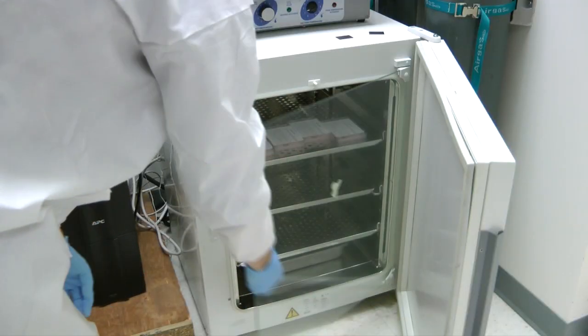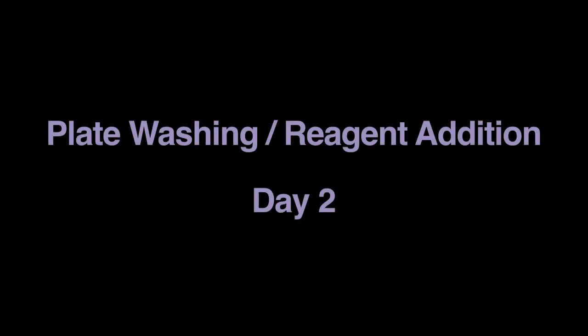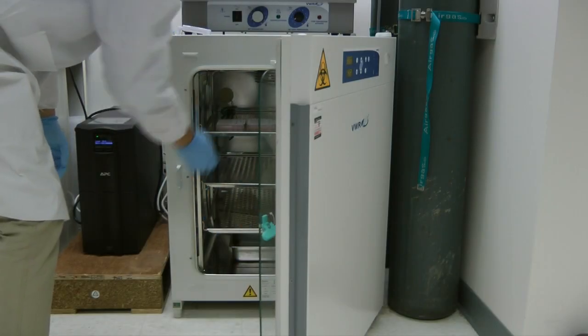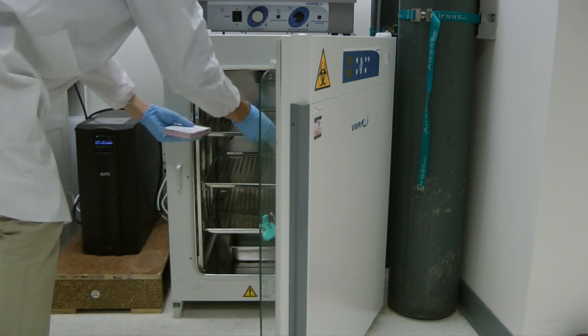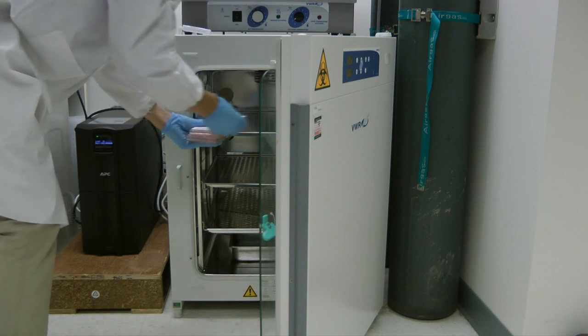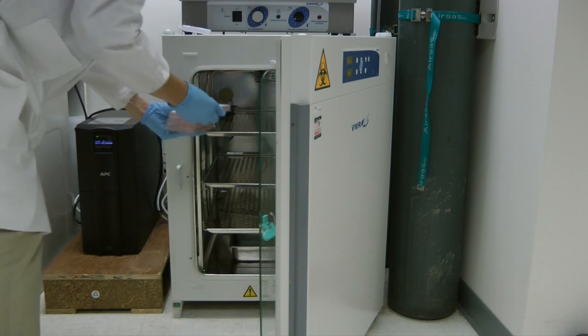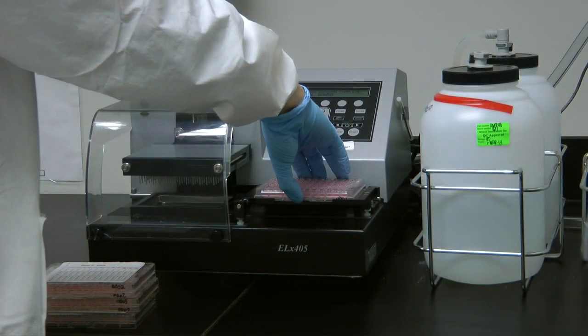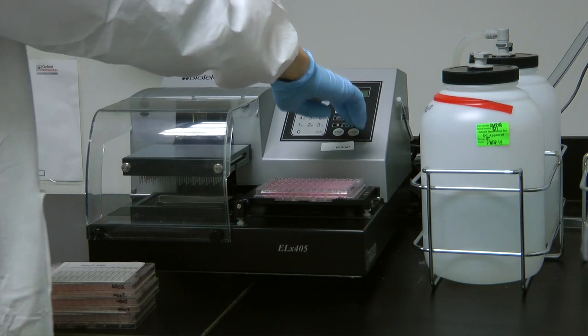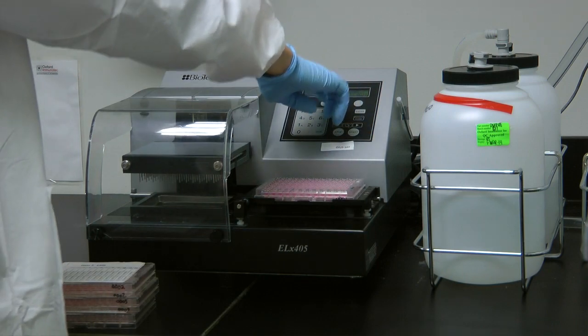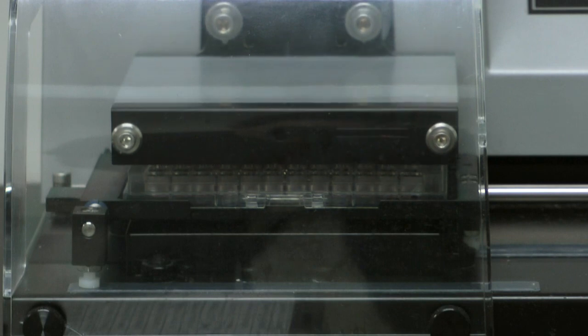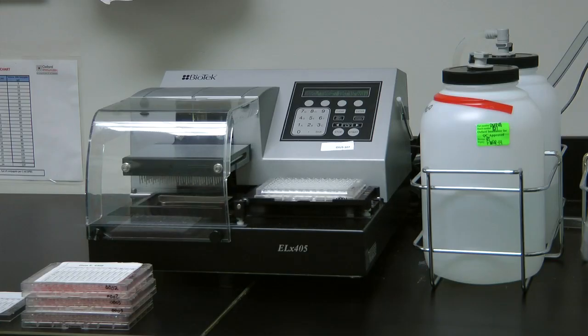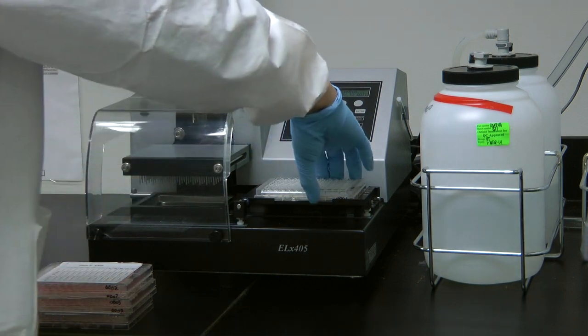Plates are then incubated overnight. The Janus liquid handling system is also used on day 2 to develop spots and prepare the plates for reading. Following incubation, the T-spot TB microtiter plates are washed with phosphate-buffered saline. This step can be performed on the Janus or a plate washer. Wash cycle times can be shortened to 30 seconds with a plate washer such as the Biotech EX405. Four plates can be washed in less than three minutes.